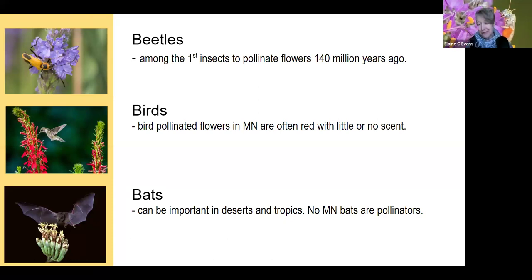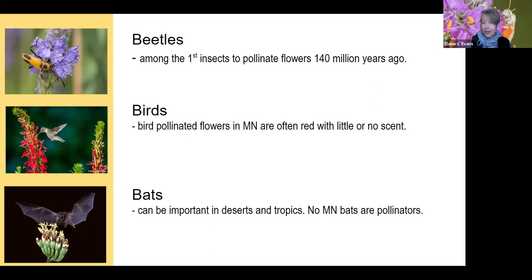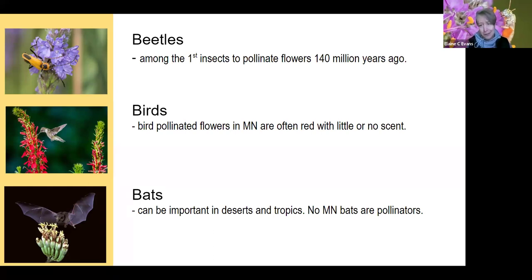Beetles also visit flowers and have a really ancient relationship with them — beetles were among the first insects to pollinate flowers around 140 million years ago. In Minnesota, the only bird that does significant pollinating is the hummingbird. Bird-pollinated flowers are often red and often lack strong smell. Bats can be really important in desert and tropical systems for moving pollen, but none of the bats in Minnesota are pollinators.